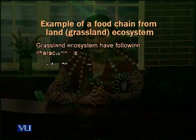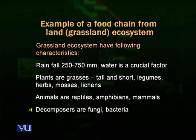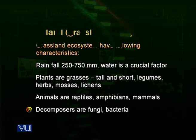Animals which flourish in these ecosystems are the reptiles, the amphibians, and different types of mammals. Decomposers, as in all ecosystems, are part of this ecosystem and these are mainly the fungi and the bacteria.